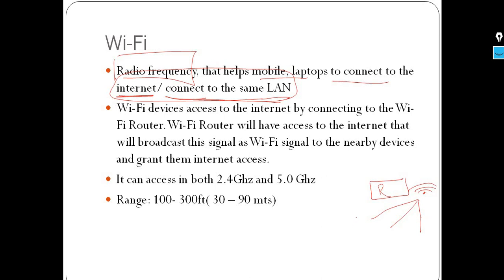When a Wi-Fi broadcast signal is sent, it can be received by a mobile phone, desktop, or laptop. The device will receive the Wi-Fi connection and be connected to the Wi-Fi network. Once connected, if the router has internet access, that internet access is shared to all devices on the Wi-Fi network.